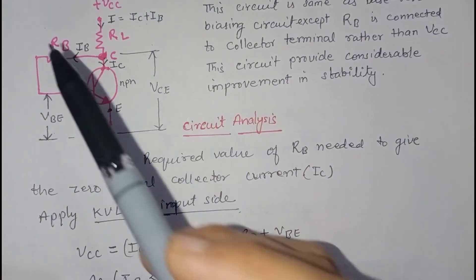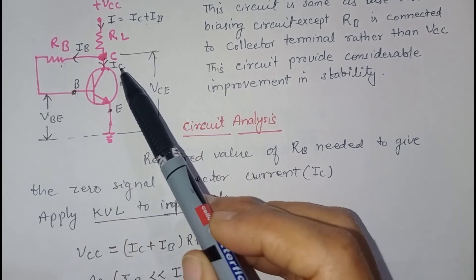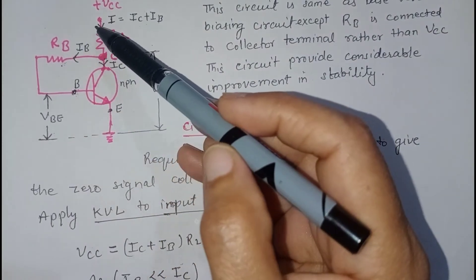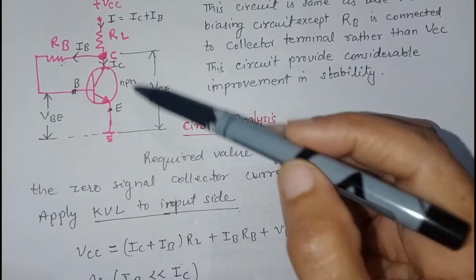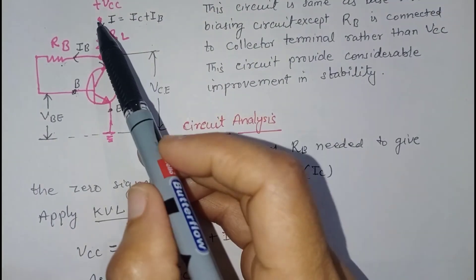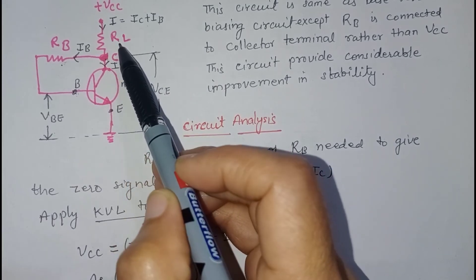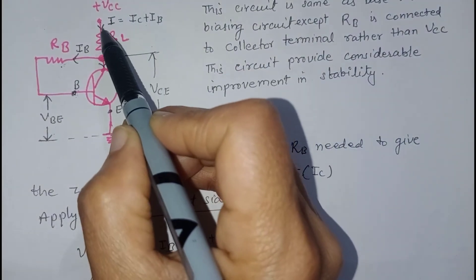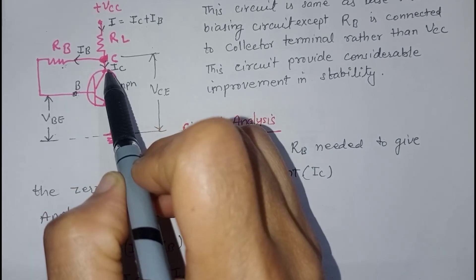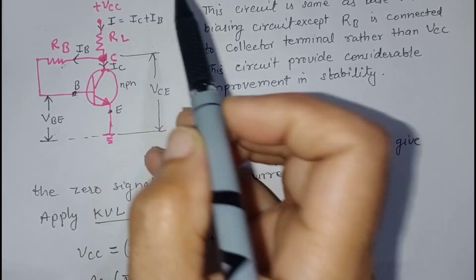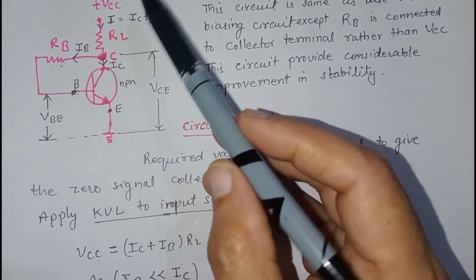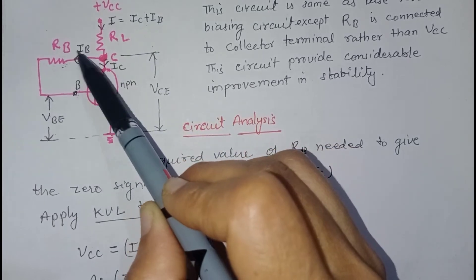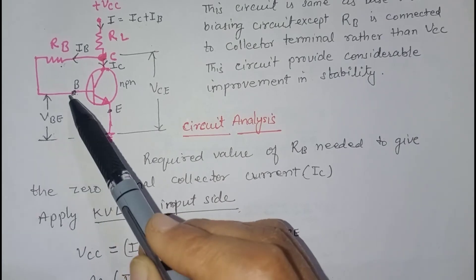Now we will analyze the circuit to find the required value of RB so that a required zero-signal collector current flows in the circuit. To find the value of RB, we will apply KVL on the input side. The loop equation will be: VCC equals I into RL, where I equals IC plus IB, because the current I divides at the node into IB and IC. So the loop equation for the input side is: VCC = (IC + IB)·RL + RB·IB + VBE.